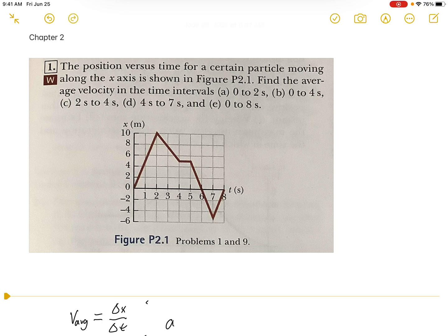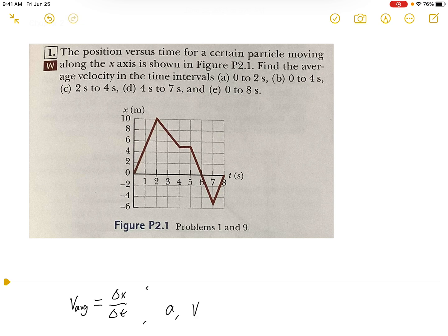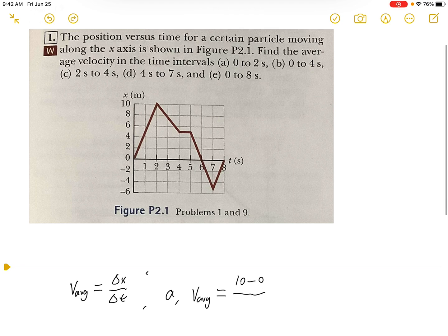For part a, we simply plug in the values. We average from 0 seconds to 2 seconds. x changes from 0 to 10, so it's 10 minus 0, final minus initial, over 2 minus 0. So for part a, the average velocity is 5 meters per second.